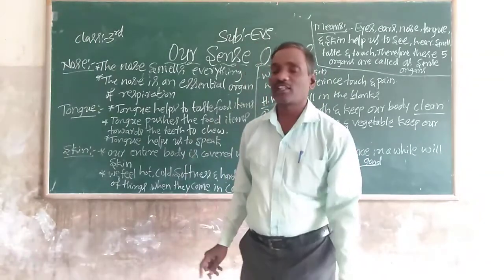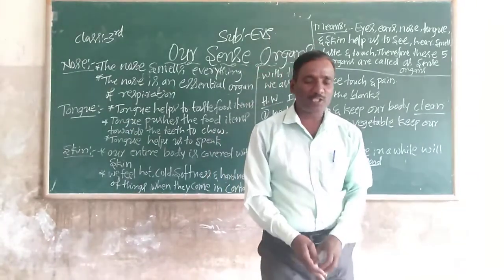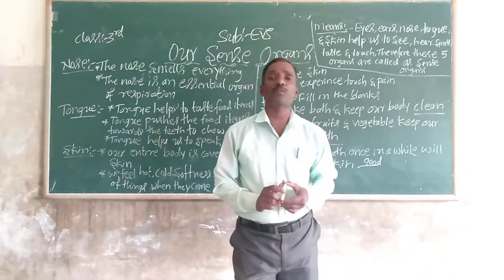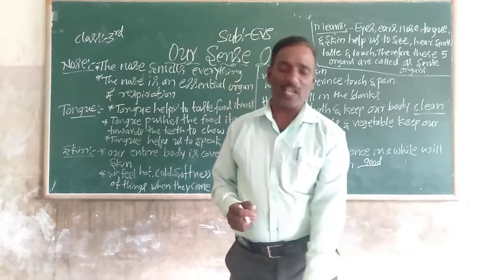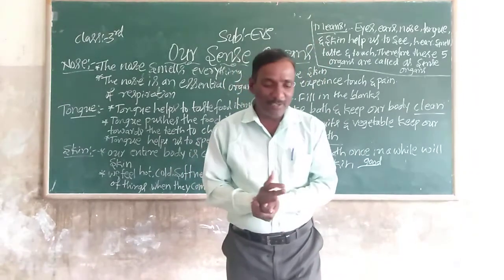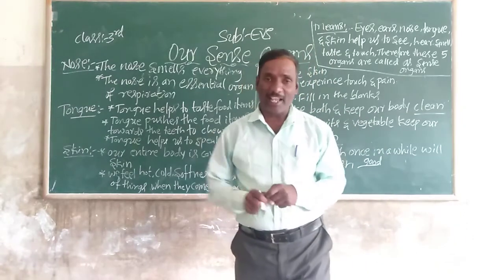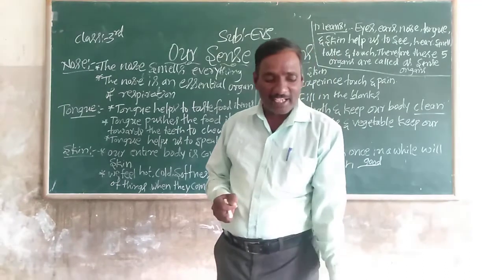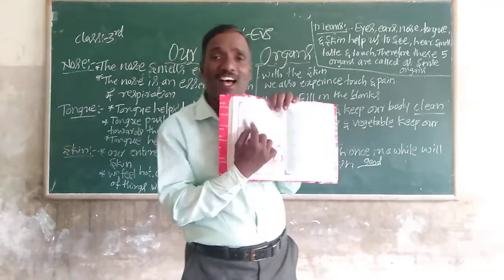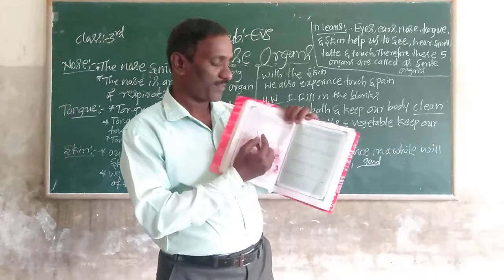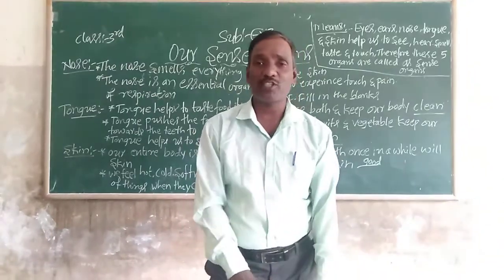Now let's talk about another part of the body — the tongue. There is something special today in the midday meals at government schools. In Ramesha's school, the menu includes payasam, lemon rice, chili, bitter gourd gravy, and more. Which of these items do you like the most? Think about the taste of each item — payasam is sweet, lemon rice is sour, and bitter gourd is bitter.